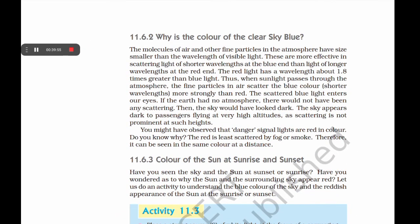The molecules of air and fine particles in the atmosphere have sizes smaller than the wavelength of visible light and are more effective in scattering light of shorter wavelengths (blue end) than longer wavelengths (red end). The red light has a wavelength about 1.8 times greater than blue light. When sunlight passes through the atmosphere, fine particles scatter blue light more strongly, so scattered blue light enters our eyes making the sky appear blue. Danger signal lights are red in color because red is least scattered by fog or smoke and can be seen at a distance.